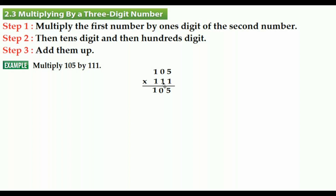Before you start multiplying by the tens digit, you have to add one extra zero from the ones digit. Now it's easy to multiply the first number by the tens digit of the second number. 1 times 5 is equal to 5 — you are going to write it under the tens digit.